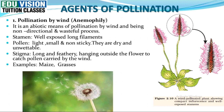First is pollination by wind. This process is called anemophily. This is an abiotic agent of pollination. This process is non-directional and wasteful because pollination in this process happens by chance. The stamen of flowers pollinated by wind have well-exposed and long filaments, as you can see in this diagram.